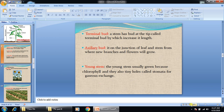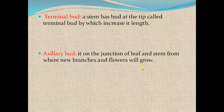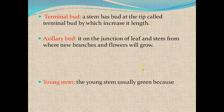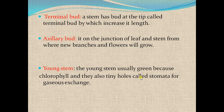A young stem is usually green because it has chlorophyll and can carry out photosynthesis. A young stem also has small pores called stomata, through which gaseous exchange takes place.